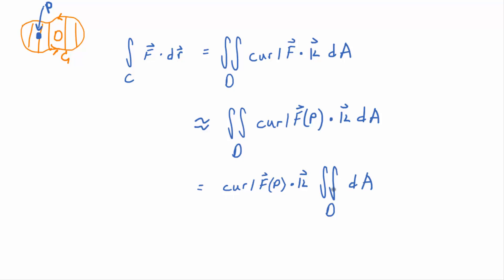Now, when the integrand is one, what does that integral represent? The area of D. So, it's curl of F evaluated at P, dotted with K, times the area of the region.